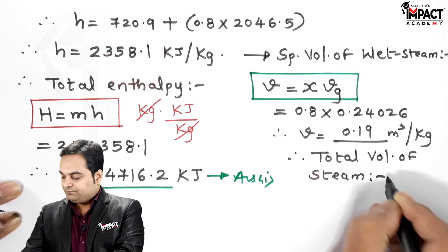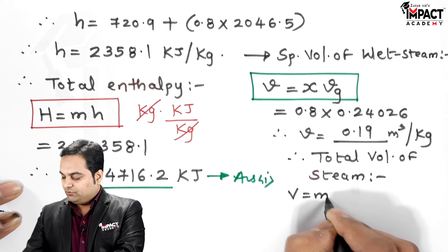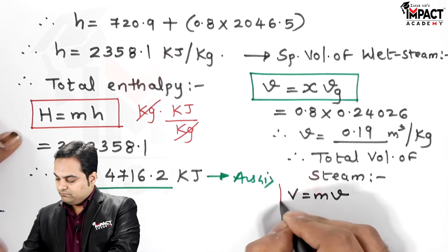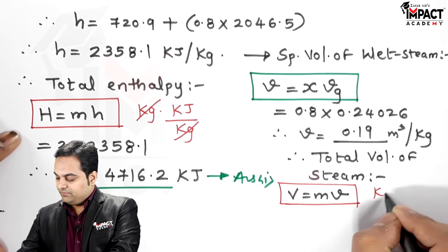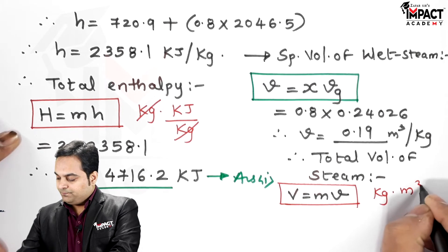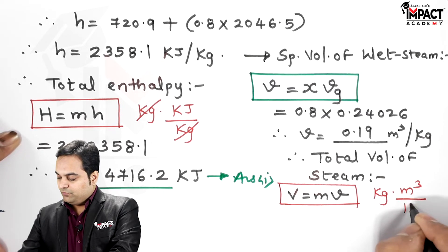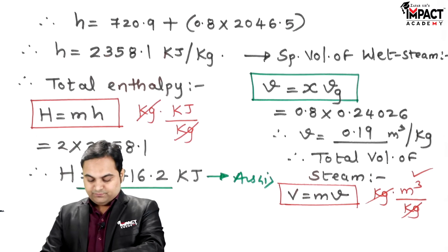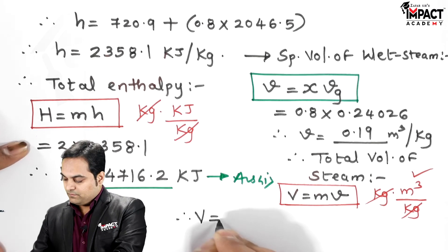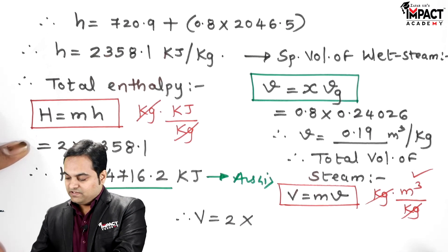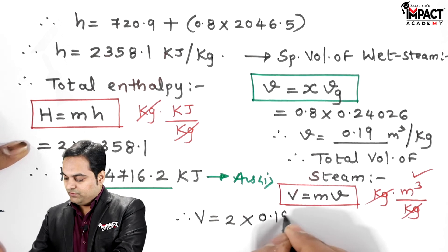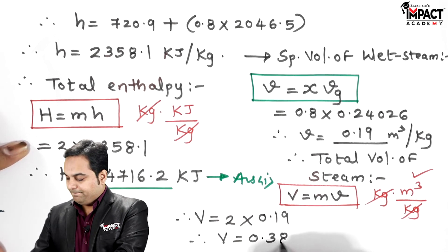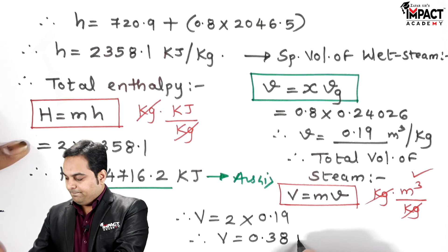Therefore, the total volume of the given steam is: V = mass × specific volume = 2 kg × 0.19 m³/kg. The kg units cancel, giving a total volume of 0.38 m³.